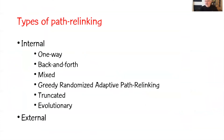There are many types of path relinking. They can be categorized as internal or external. Internal includes: one-way (s to t), back-and-forth (s to t then t to s), and mix (beginning at each end and meeting in the middle). Other variants include greedy, randomized, adaptive path relinking (greedy-randomized choice), truncated (not examining everything in the path), and evolutionary.